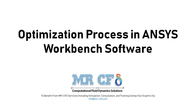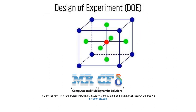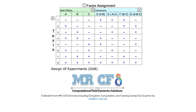Optimization Process in ANSYS Workbench Software. DOE is a set of measures that are performed using process modeling and related variables and lead to increased production efficiency. In fact, a set of different parameters that affect the outcome of a process is analyzed to obtain the best possible values for the production of an optimal product.